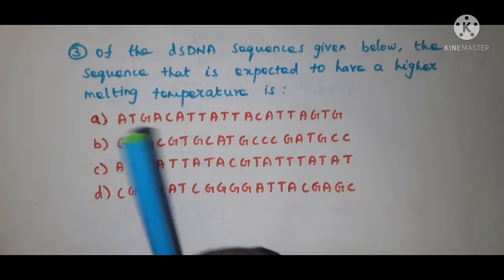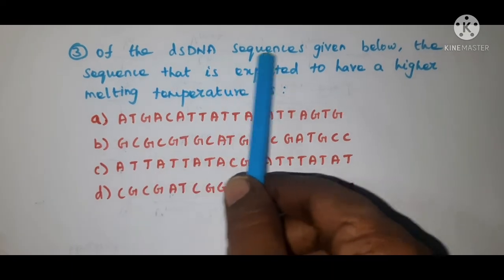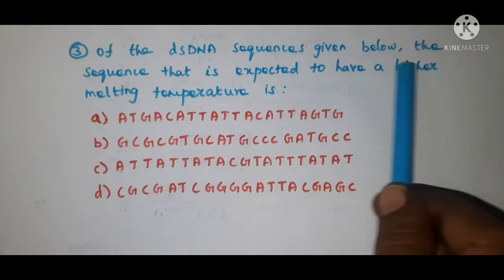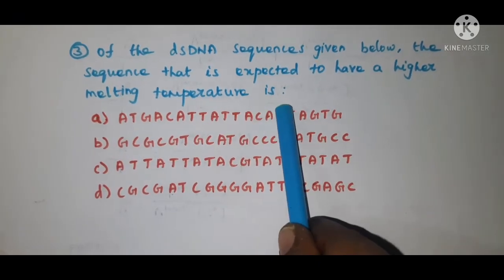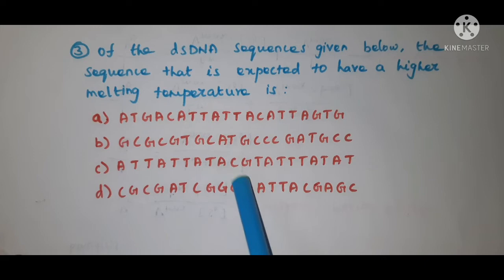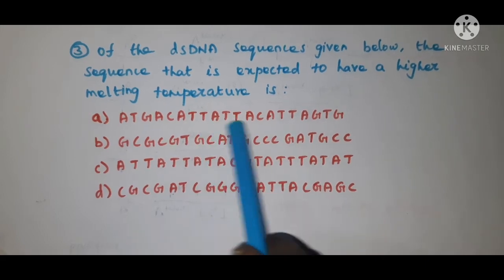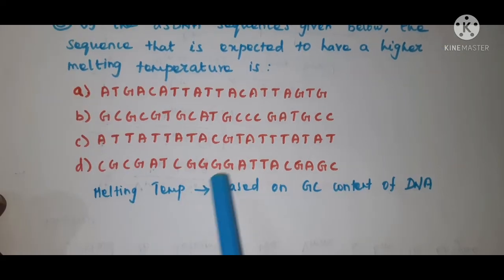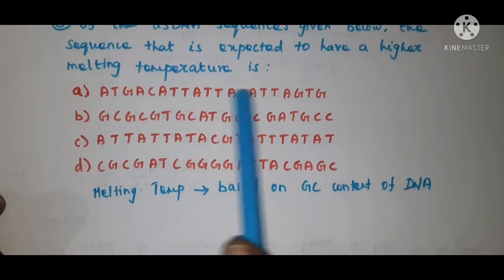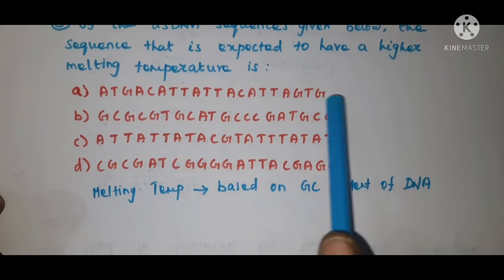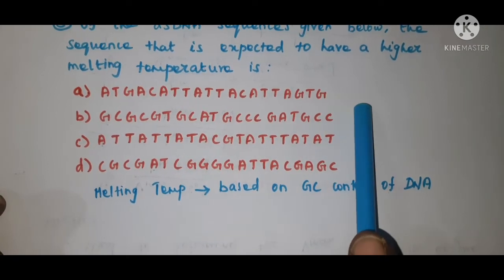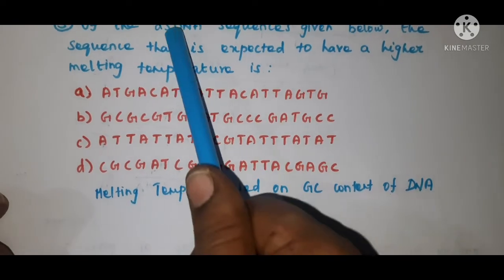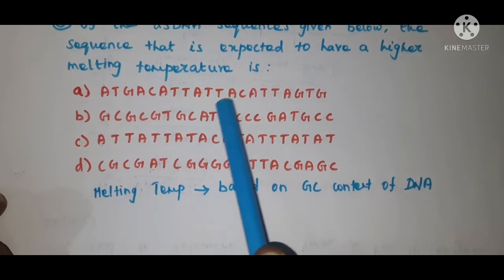So, the problem is: of the double-stranded DNA sequences given below, identify the sequence that is expected to have a higher melting temperature. In these 4 options, you have to find out which sequence has the higher melting temperature. Notice that in the given options, they have given only one strand of your double-stranded DNA. The other strand you can easily write because the 2 strands of double-stranded DNA are complementary to each other.